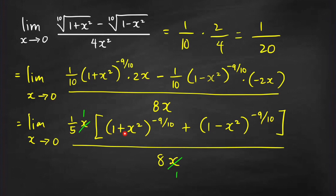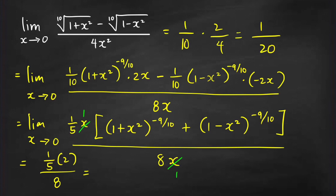Now we can already evaluate the limit because the limit of our denominator is not equal to 0. The limit of (1 plus 0) raised to negative 9 over 10 is just 1. And (1 minus 0) raised to negative 9 over 10 is also just 1. So 1 plus 1 equals 2. Therefore, the limit of the numerator is 1 over 5 times 2, all over 8. This is equal to 2 over 40, which is equal to 1 over 20. This confirms that the limit of the expression is equal to 1 over 20.